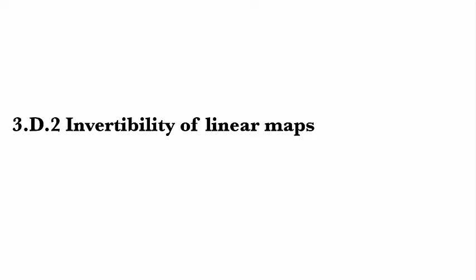So now we look at invertibility properties of linear maps and the magic is basically that as soon as you have a linear map that's invertible, the inverse is automatically linear.